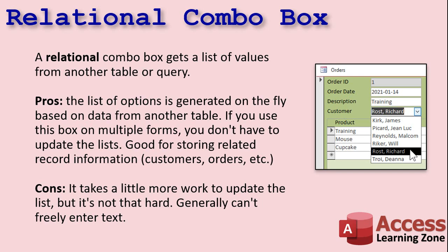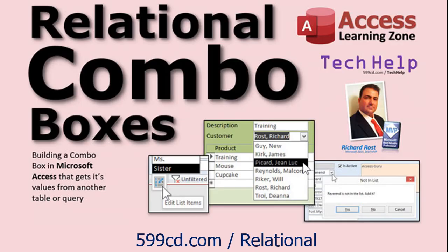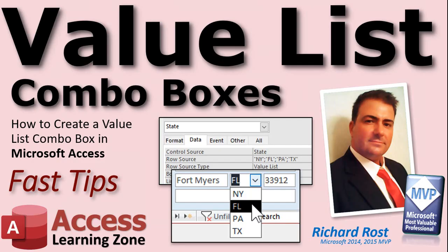The downside to the relational combo box is it takes more work to update the list, though you can set up something called a list items edit form that makes it easy. Also, you generally can't freely enter text — if you allow the user to type something in, you need some VBA using something called a not-in-list event to add it to the list, which is more complicated. For most databases you generally make it so the user has to pick from an existing list. I have a whole separate video on building relational combo boxes, but in this video we're going to focus on value list combo boxes.